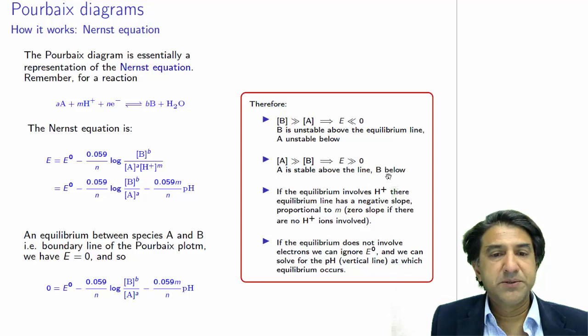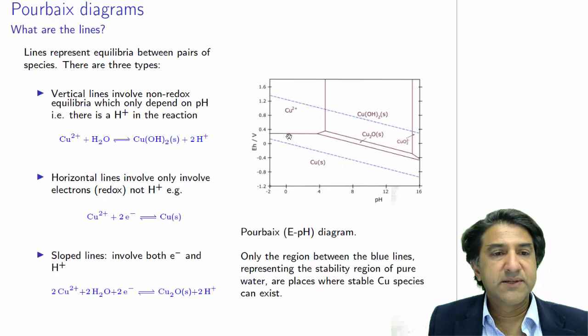OK. So here's the particular equilibrium line. And we're saying that above the line, A is stable, below the line, B is stable. Let's go back to the previous diagram. What we're saying here is above this line, Cu2 plus is stable, and copper 2 plus is stable below.